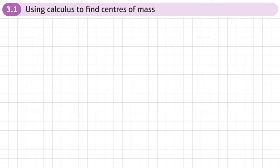This is the first section of chapter 3 on further centres of mass. This section is about using calculus to find the centres of mass. We're going to start off by going through the proof before we go through the equations.